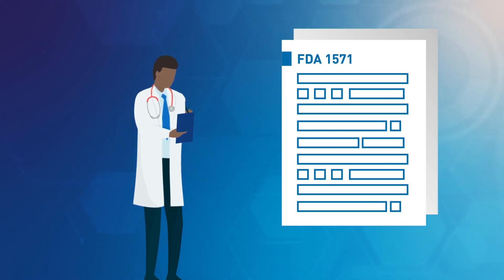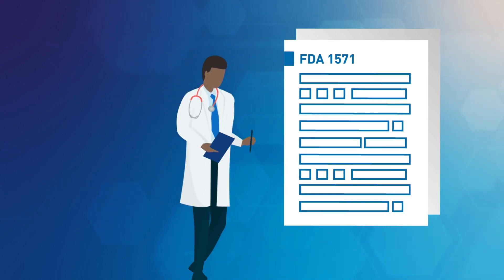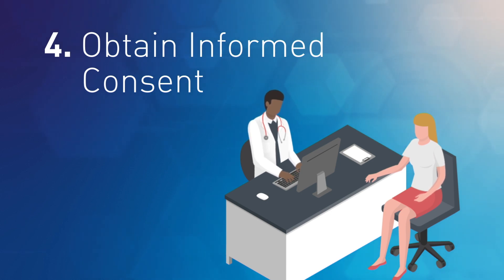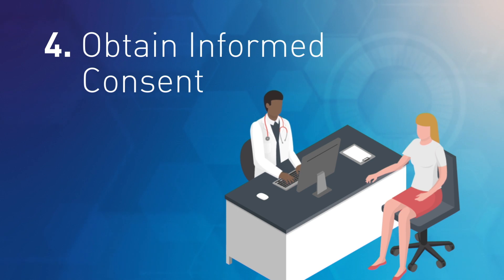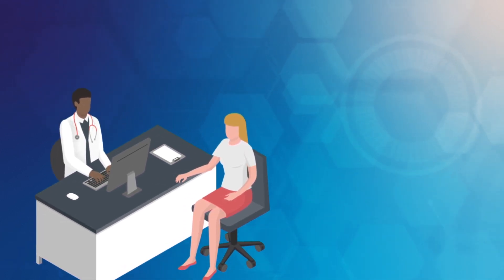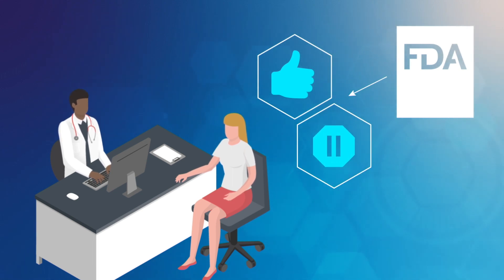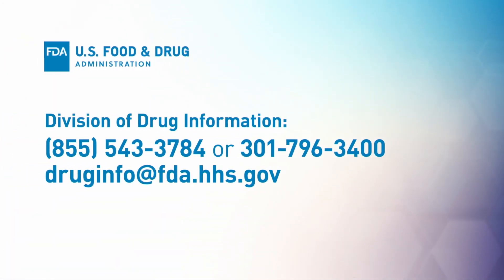IRB requirements for emergency treatment are discussed earlier in this video. Step four: obtain informed consent from the patient or their legally authorized representative. Upon receipt of the expanded access request, FDA will either allow treatment to proceed or place the application on clinical hold. Clinical holds are rarely necessary. If needed, we may contact you for more information to process your request. For assistance, contact FDA's Division of Drug Information. If you're already working with the review division, give them a call.